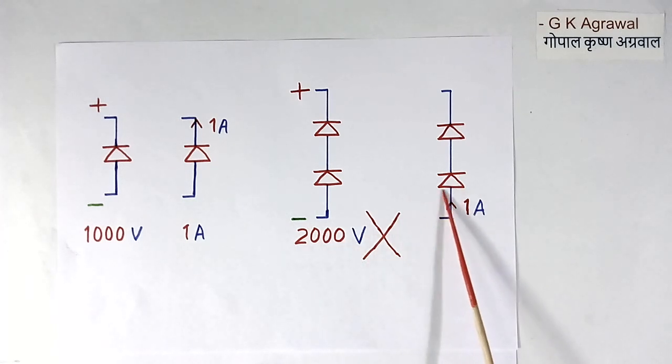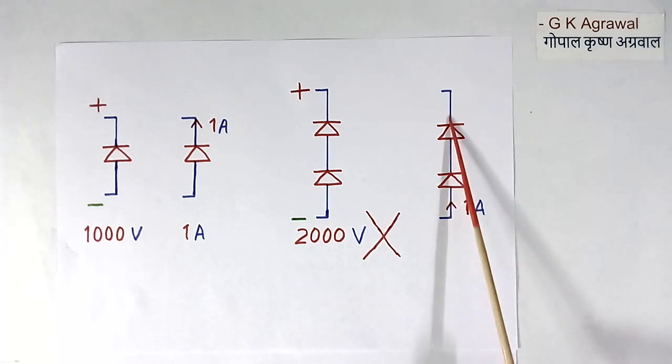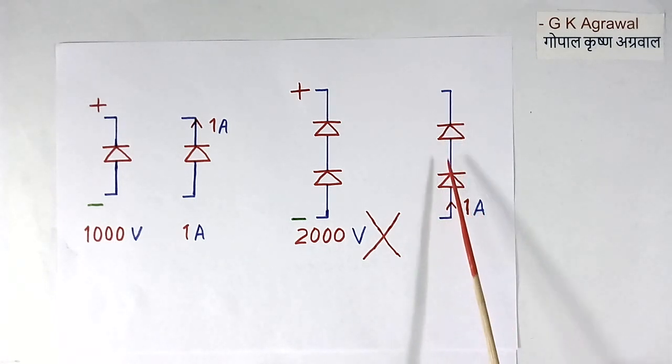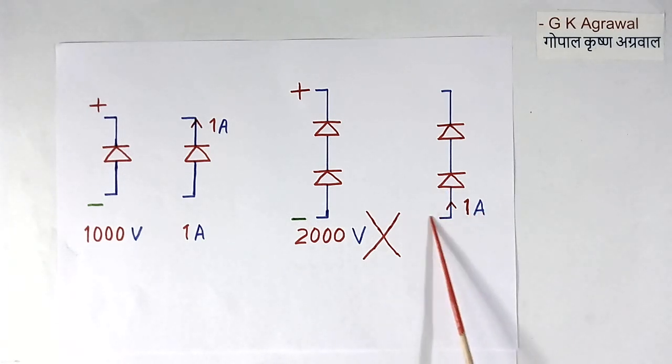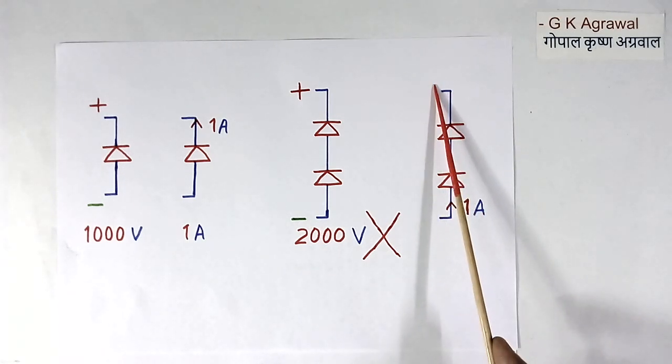Now when we connect 2 diodes in series, and 1 ampere current is flowing, the same 1 ampere current will flow in both the diodes. So current rating will not increase. Current rating will remain 1 ampere.